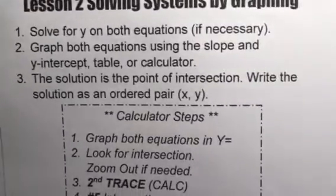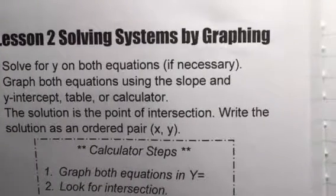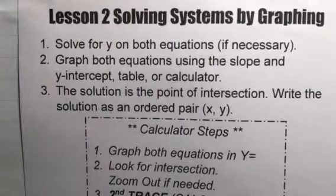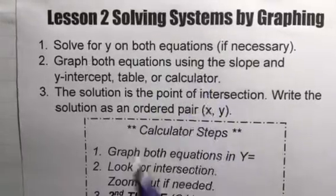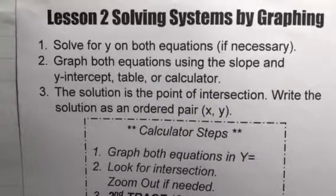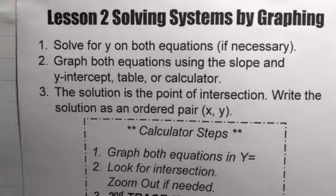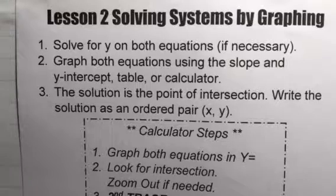There are three ways of solving systems, but we're solely going to focus on graphing. Now, here's the things that you need to know. You need to solve for y on both equations. So you will have two different equations, and both equations need to be y equals. You're going to graph both equations using the y-intercept slope and a table or a graph. So those are different ways that you can graph them.